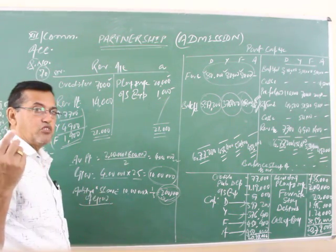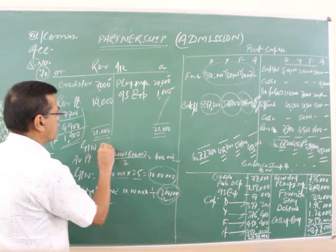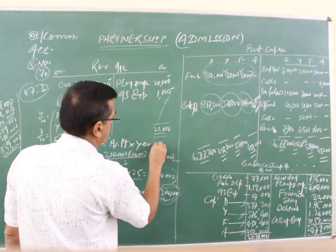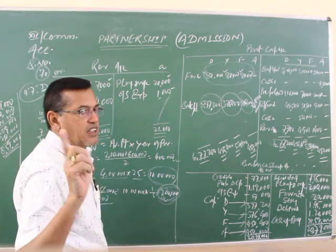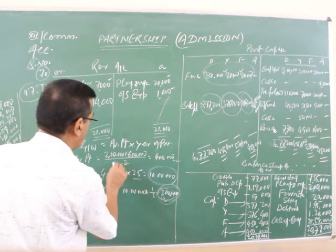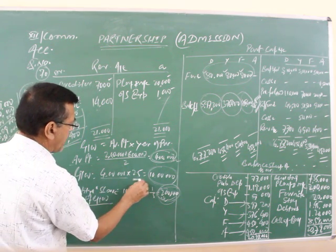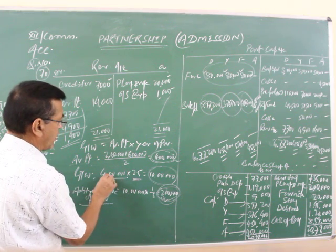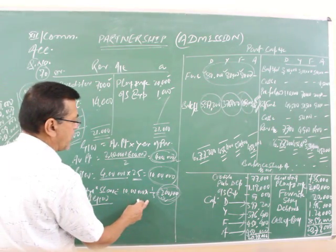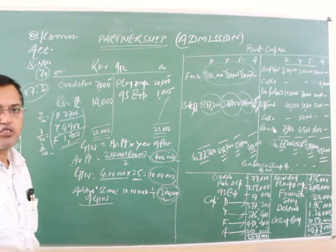And here I have shown you about the valuation of goodwill which I have already given in so many videos. Goodwill would be equal to average profit multiplied by year of purchase. Average profit of the last two years has been asked, that's why I have taken average profit of the last two years: two lakhs plus six lakhs, average profit coming four lakhs, year of purchase 2.5, total goodwill of the company ten lakhs. And Adit brings one-fifth share of the goodwill, so 2 lakhs. This is the solution. Understood?